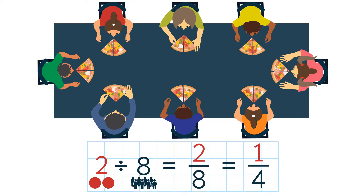As you can see, a division problem can be rewritten as a fraction, and a fraction can be rewritten as a division problem. So two divided by eight is the same as two eighths.